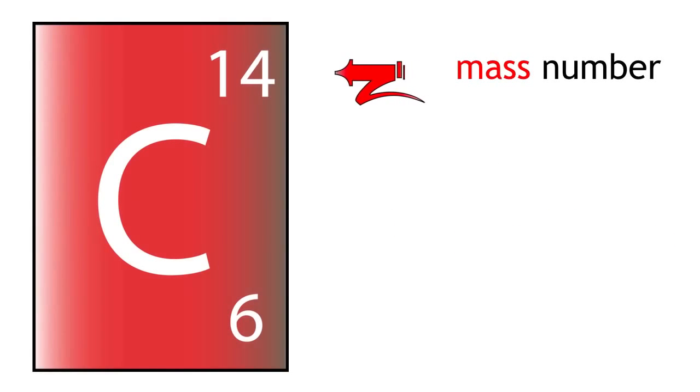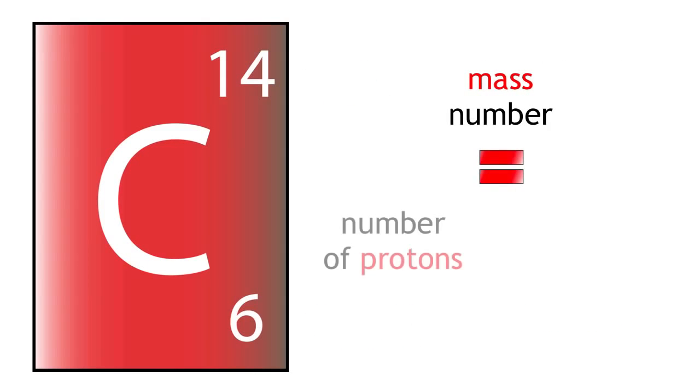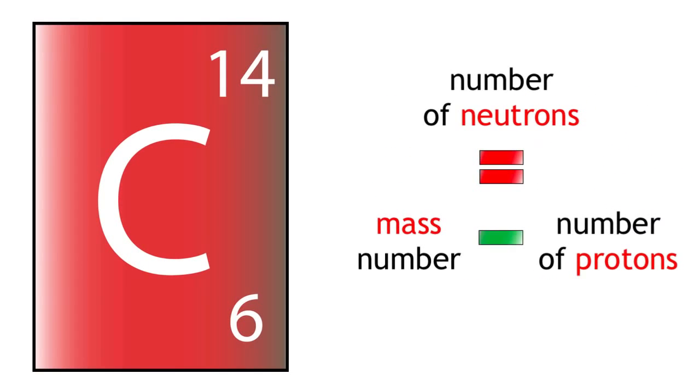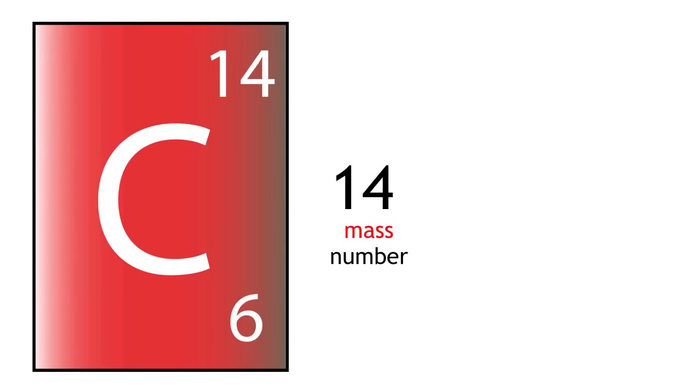Carbon-14 has a mass of 14 but it still only has 6 protons. Mass number equals protons plus neutrons. Rearrange: neutrons equals mass number minus protons. 14 minus 6 equals 8. Therefore, carbon-14 has 8 neutrons.